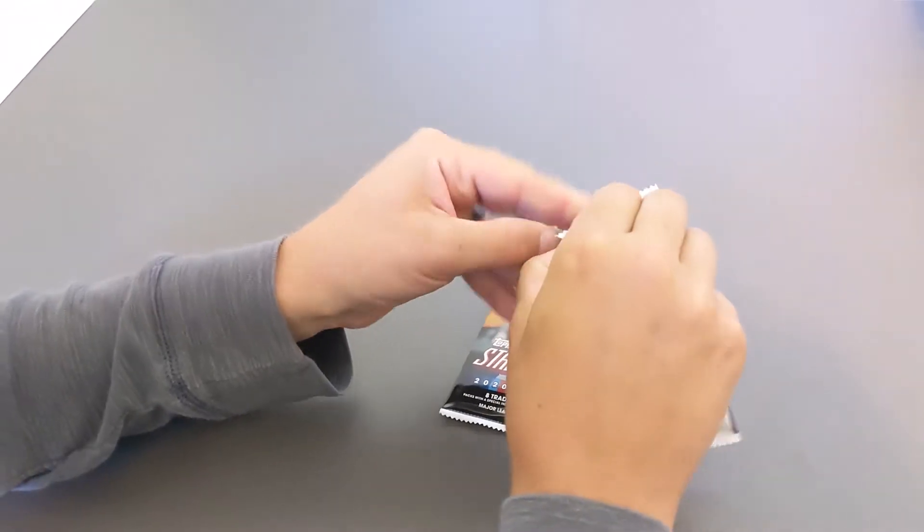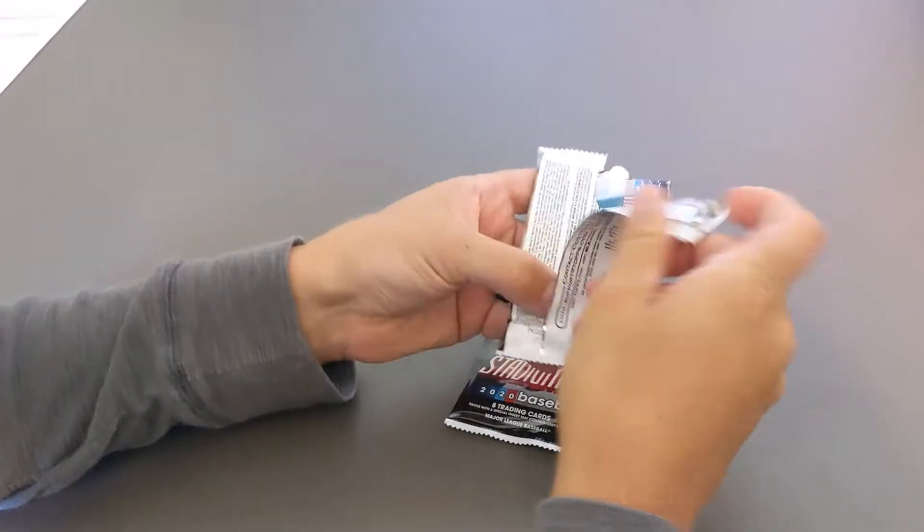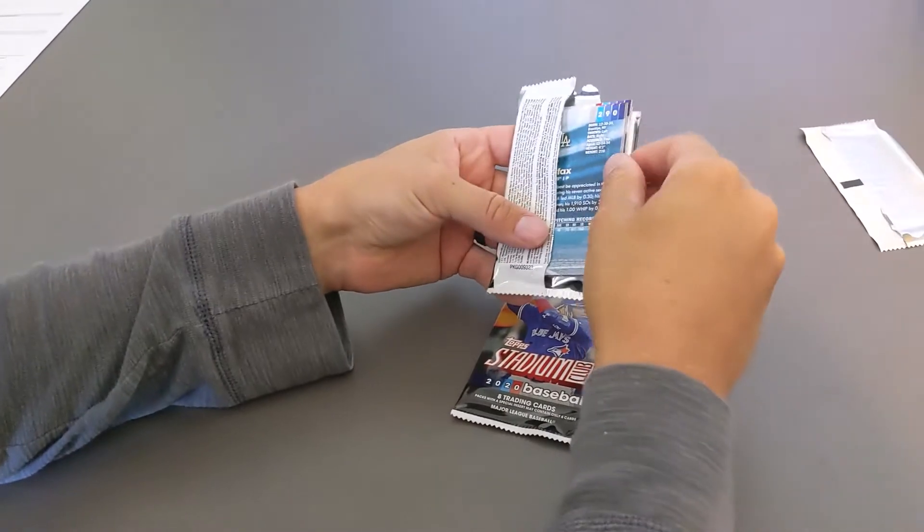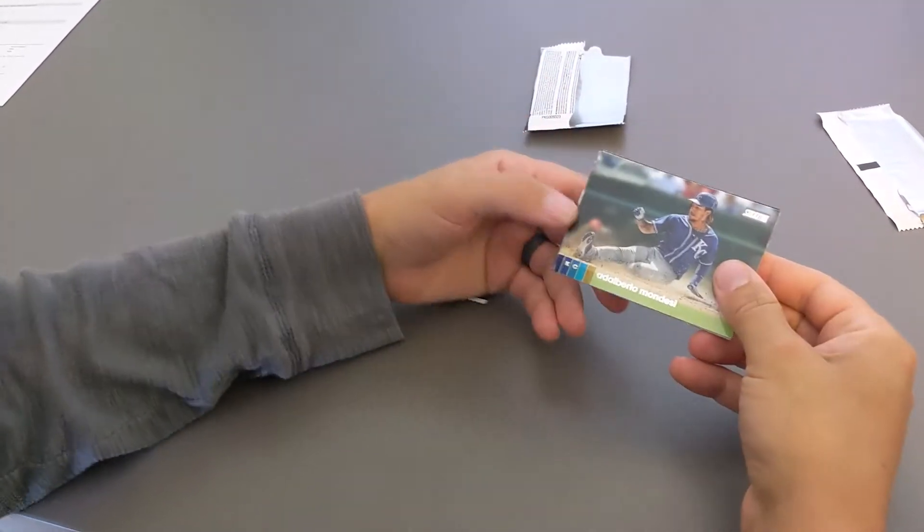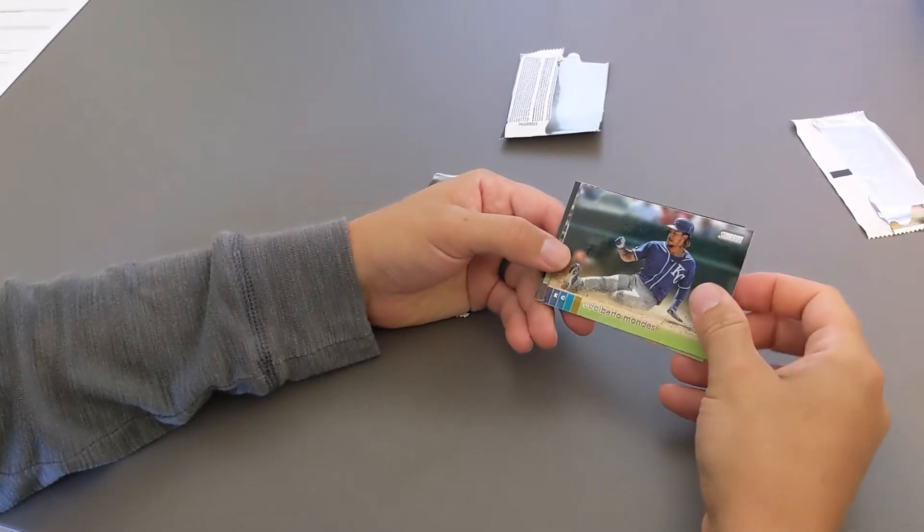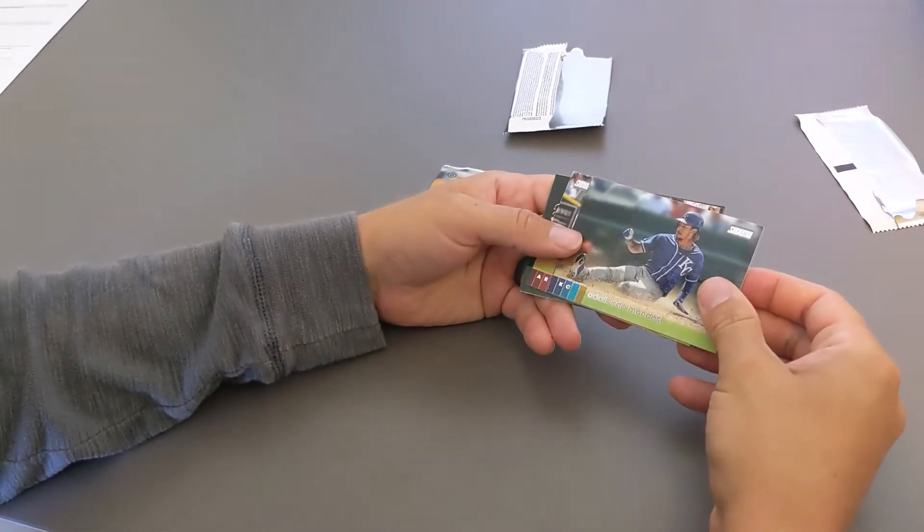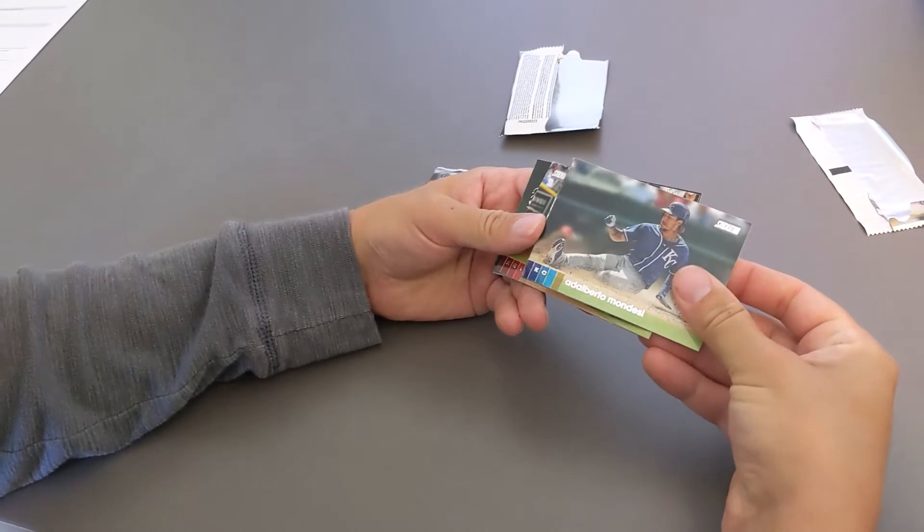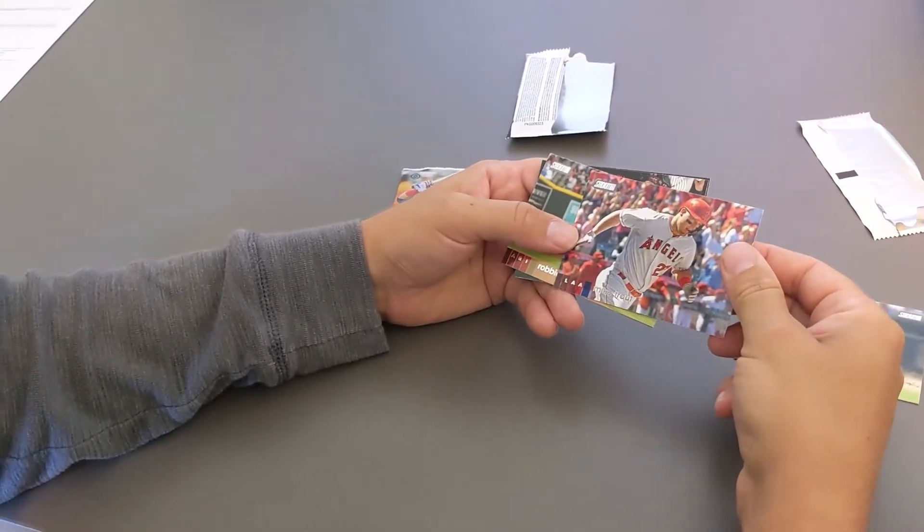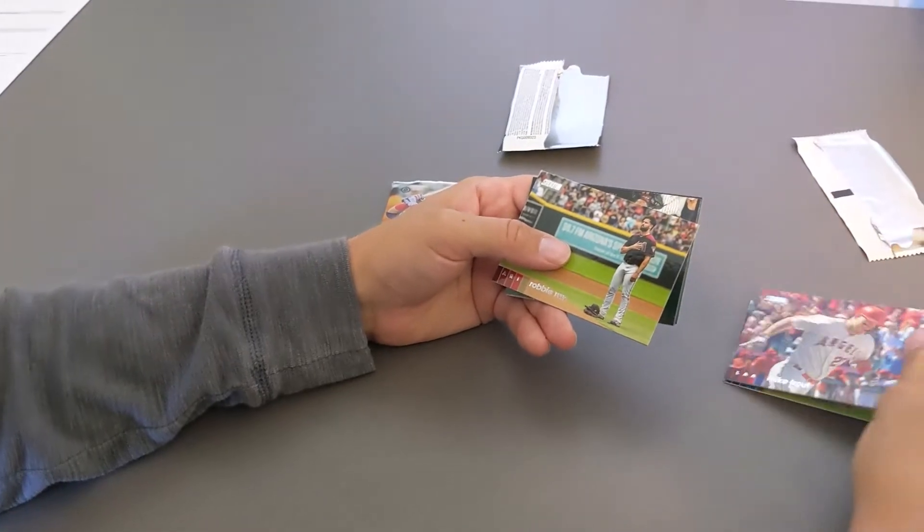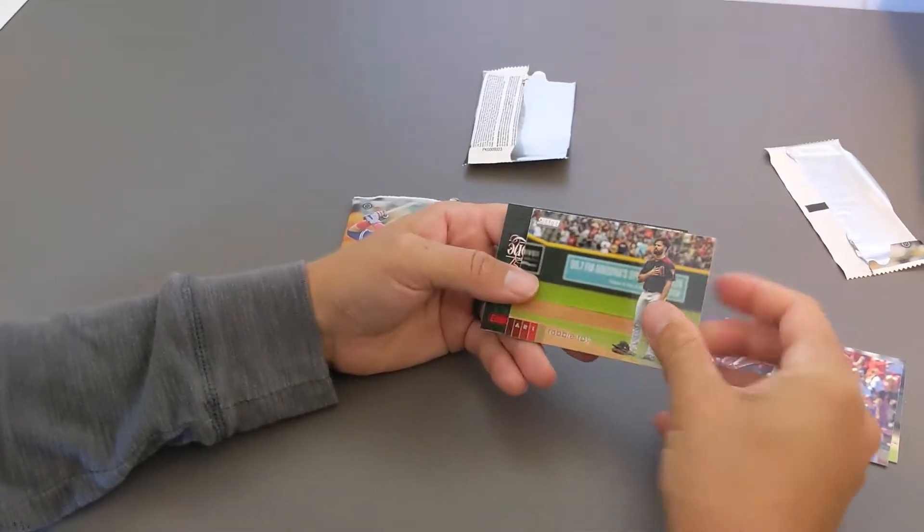Let's see what we got. This is the guy who couldn't pronounce his yesterday, I think. They're stuck together a little bit. Mike Trout. Nice card. Robbie Ray, former Tiger. Man, they're all stuck together already. Aaron Judge.